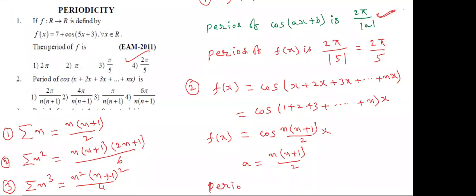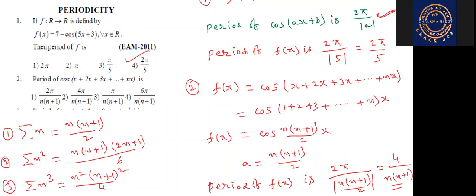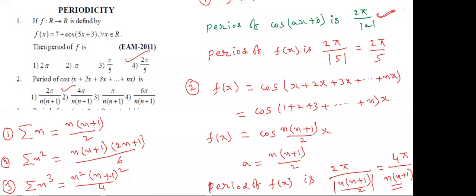The period of F(x) is 2π by the modulus of n(n+1) by 2 — and the 2 goes to the numerator — so the final answer is 4π by n(n+1). Students, which option is correct? 4π by n(n+1) — the second option is correct.